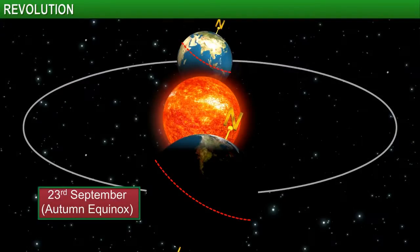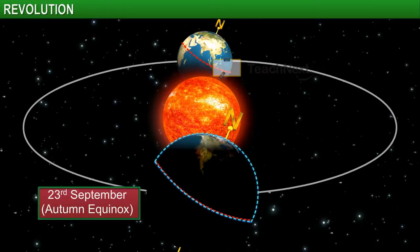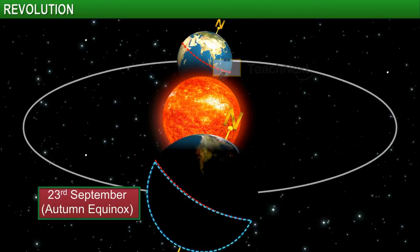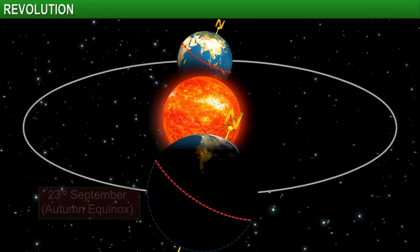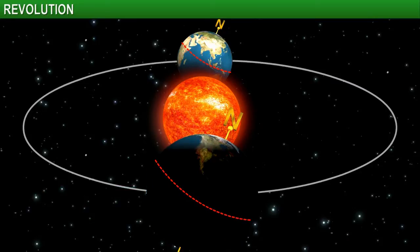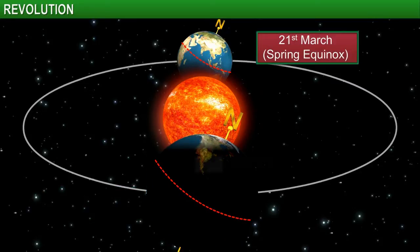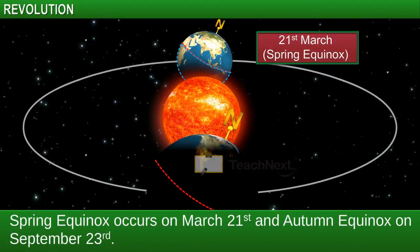On September 23rd it is autumn season in the northern hemisphere and spring in the southern hemisphere. The opposite is the case on March 21st, when it is spring in the northern hemisphere and autumn in the southern hemisphere.